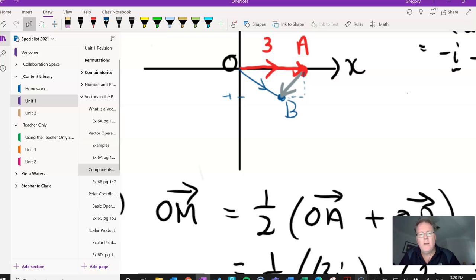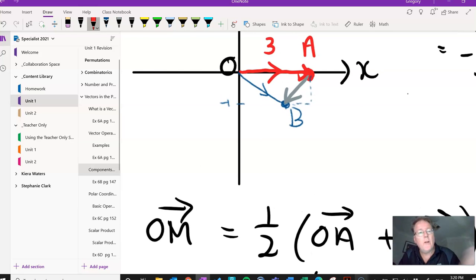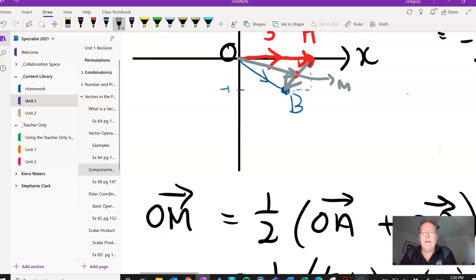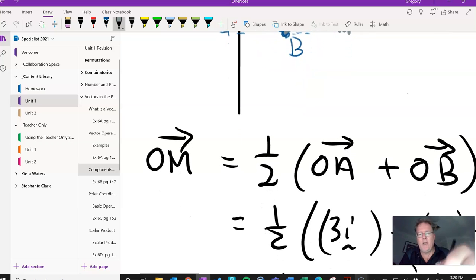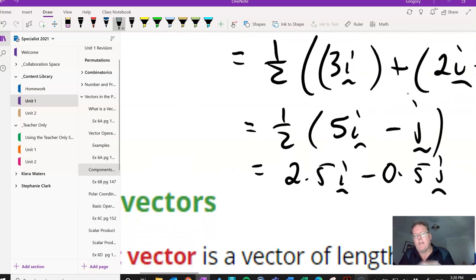If we have a look again, we're trying to find the location of that point and the vector joining it. So that point there is M. And if you have a look at that, that's about 2.5 units long. It's halfway between 2 and 3 and it's a half a unit down. And that's exactly what we've got there.